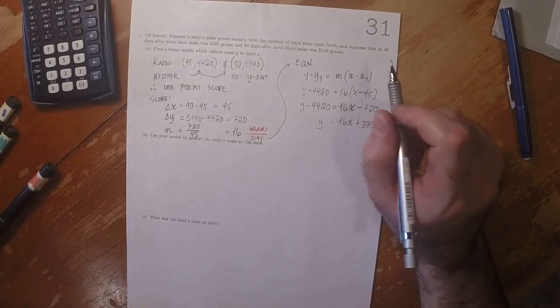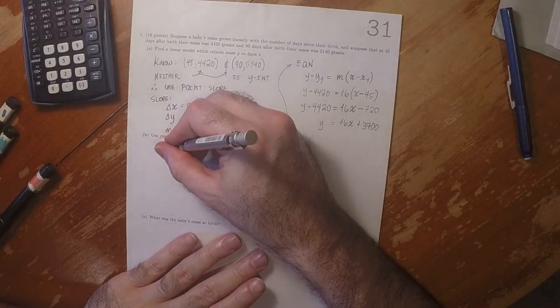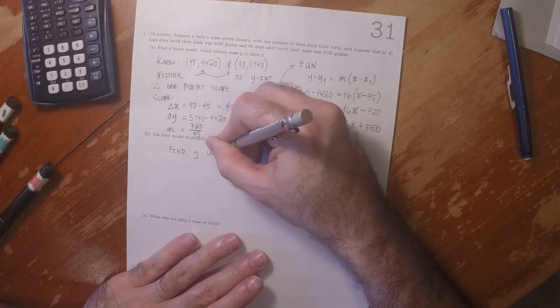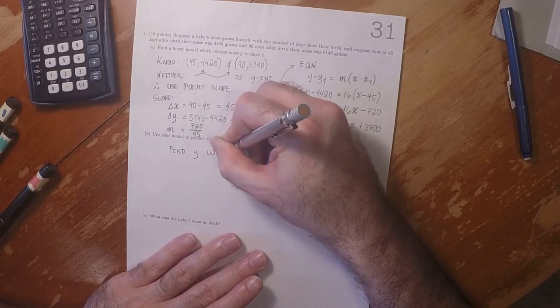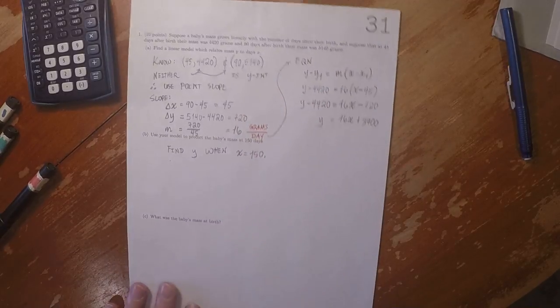Use your model to predict the baby's mass at 150 days. So y equals 16 times 150 plus 3700.